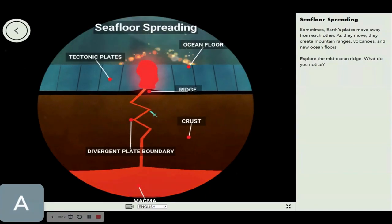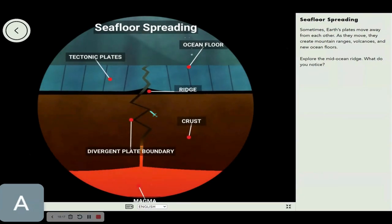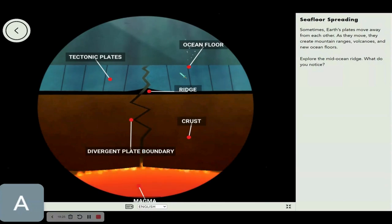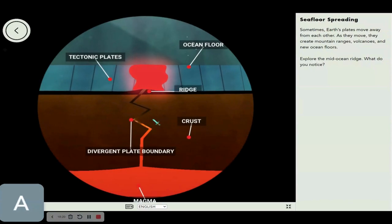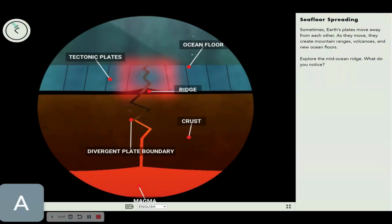Sometimes earth plates move away from each other. As they move, they create new ocean ridges, volcanoes, and new ocean floors. See that? This ocean floor is made out of magma. The magma flows up, then comes out, and freezes. It doesn't really freeze, but it forms into solid rock that we call the ocean floor.